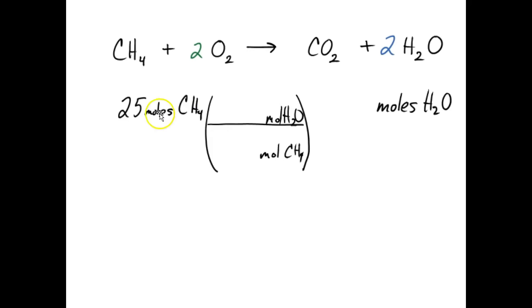I want to get rid of these units, they have CH4, so I put them on the bottom so that they'll cancel out. And I want to switch to moles of H2O, so I put them on the top. Then, I've got to figure out what numbers go here, and this is why we need the balanced chemical reaction equation.